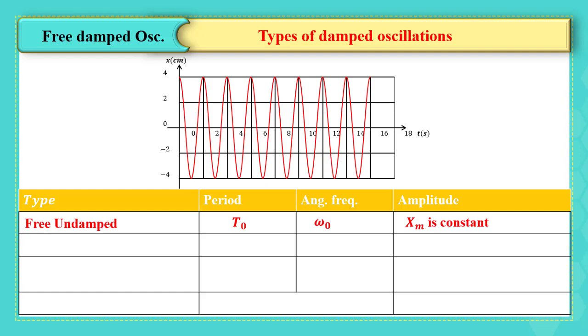The first type is slightly damping. In this case, the period is approximately equal to T0, where omega also is approximately equals to omega zero. We say that the amplitude decreases gradually with time.